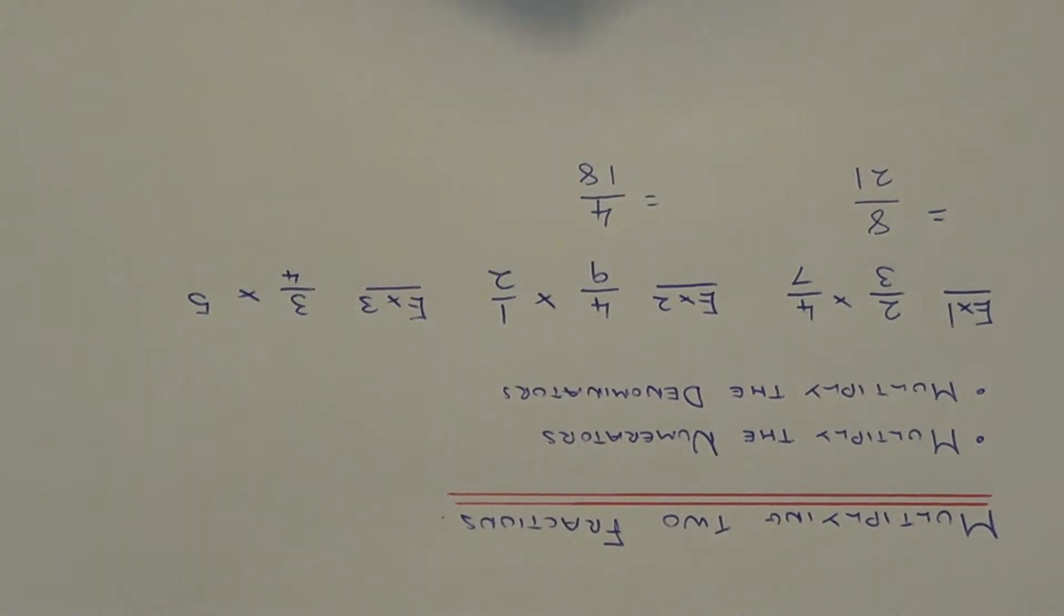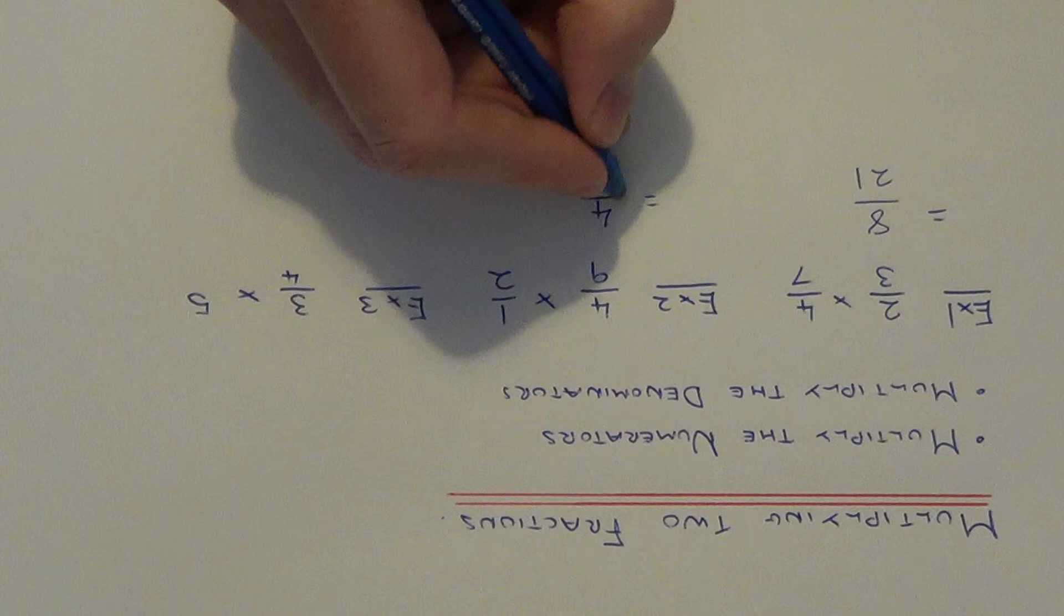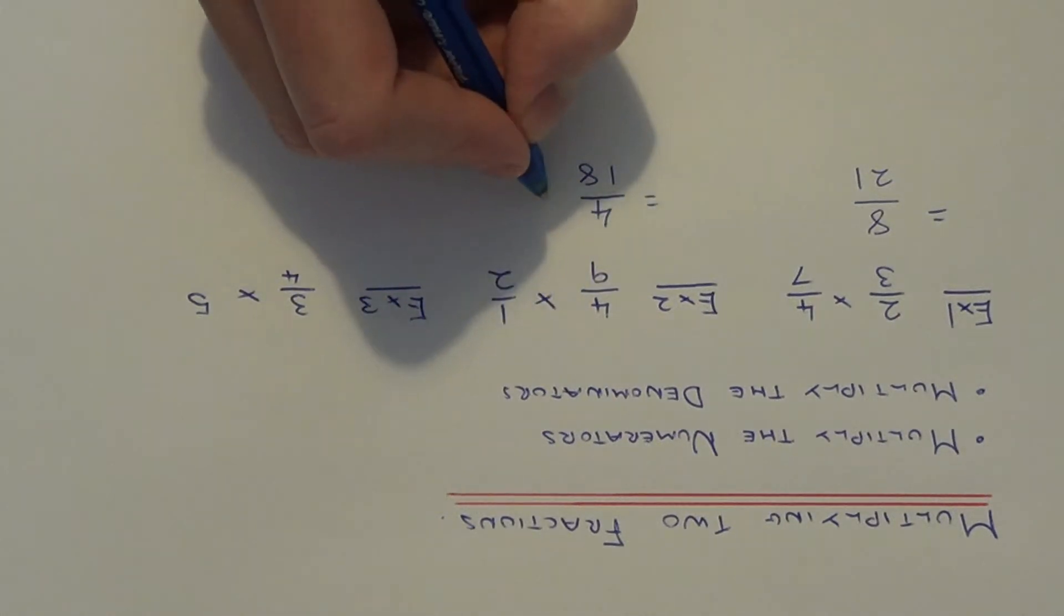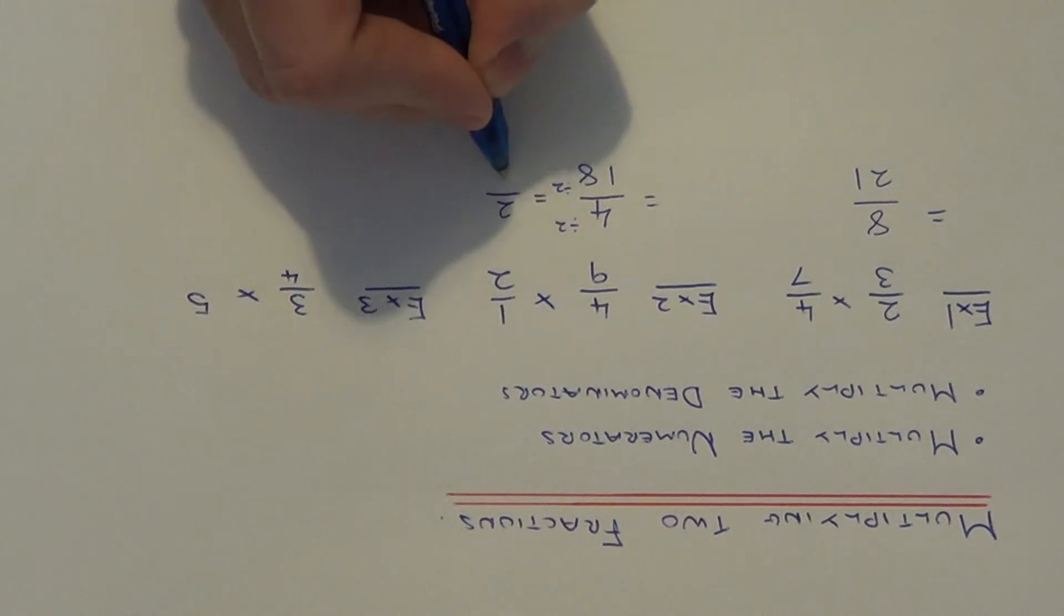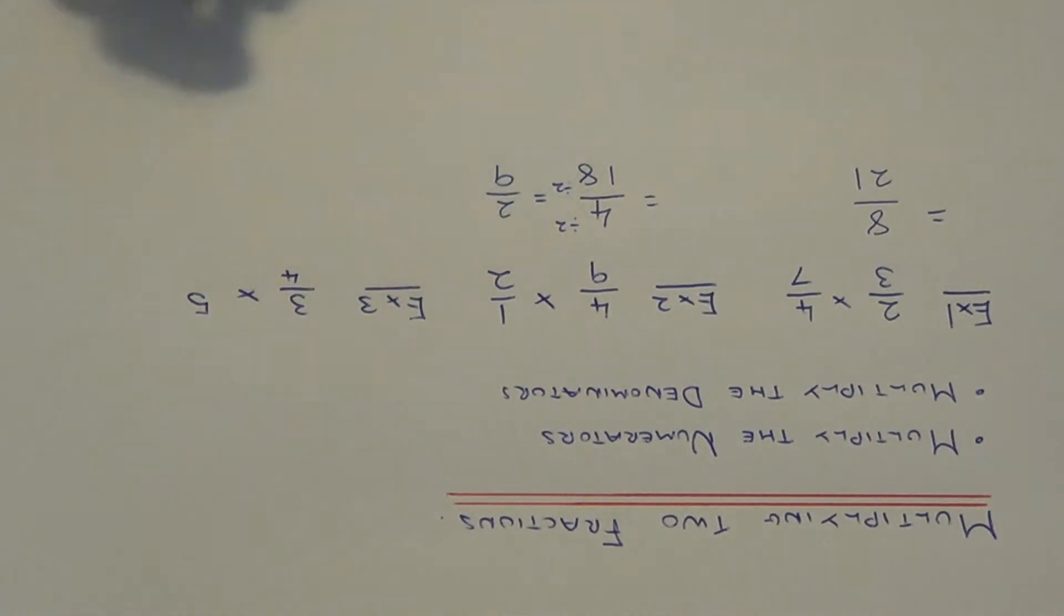This one can be simplified because 4 and 18 are both multiples of 2. If we divide the numerator and denominator by 2, 4 divided by 2 is 2, 18 divided by 2 is 9. So we get 2 ninths as our final answer.